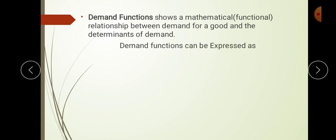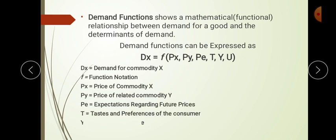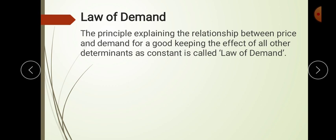Now remember the demand function. If this is asked for one mark, you write the meaning only. If asked for two marks, you write the equation as well as all the symbols: Dx = f(Px, Py, Pe, T, Y) — where Px equals price of commodity x, Py equals price of related goods, Pe equals expectations regarding future prices, T equals taste and preference, and Y equals consumer's income. Demand function is a mathematical function showing the relation between demand for a good and the determinants of its demand.